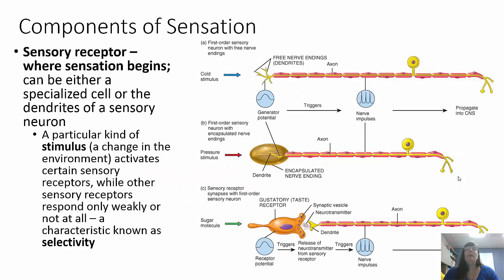A sensory receptor is where a sensation begins. It can either be a specialized cell, like it would be with vision, or it can be the dendrites of a sensory neuron. A particular kind of stimulus — any change in the environment, either external or internal — is going to activate those sensory receptors. For example, if the temperature changes, those particular temperature receptors are the ones that are going to be activated. Other sensory receptors are not going to respond, and this characteristic is known as selectivity.